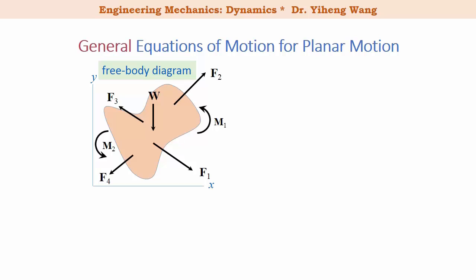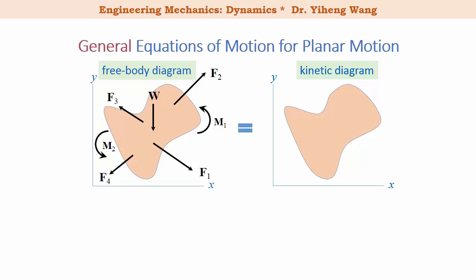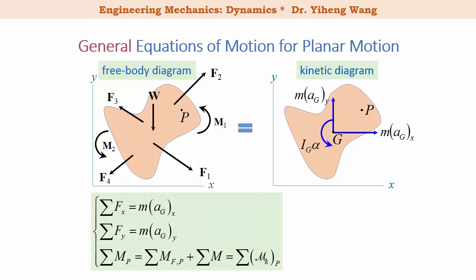Let's first review the general equations of motion for planar motion that we studied previously. For an object subjected to multiple forces and couple moments within the established coordinate system, it undergoes general plane motion, which is a combination of translations within this plane and rotation about a perpendicular axis. From the free body diagram, we can summarize all external forces, and the resultant force along the x direction equals m times a_Gx, the linear acceleration along x of the gravitational center.